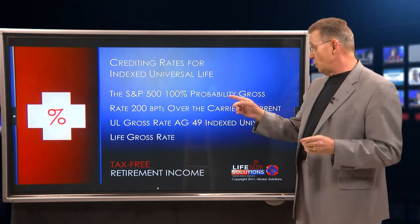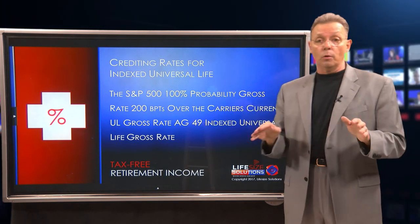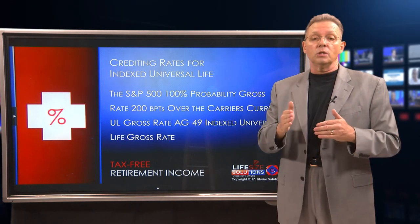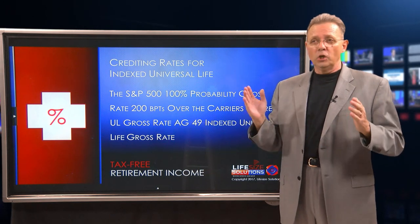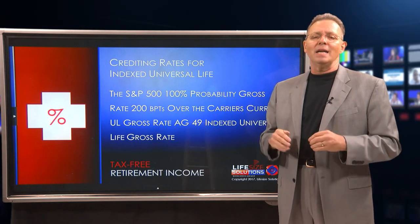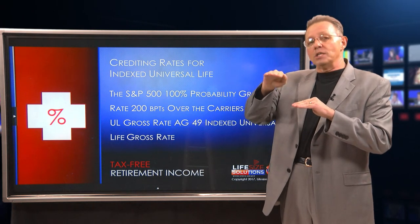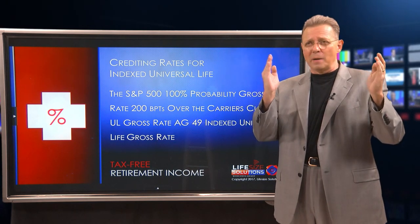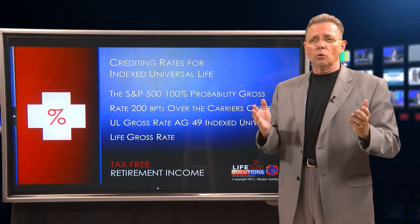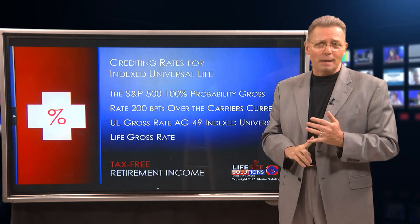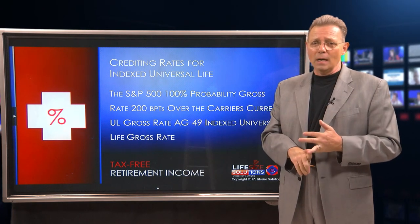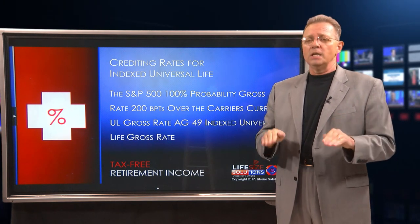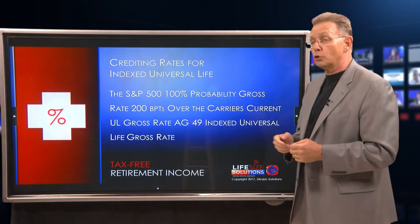The UL gross rate for AG49 is all over the board. The spread I've seen from the most aggressive to the most conservative could be a whole point — about 100 basis points play on total rate of return. So you need to make sure you're matching up the same numbers and the same measurement of when you're taking the money out so that everything's equal, giving you a good opportunity to be as objective and agnostic as you can on what products you're going to use.